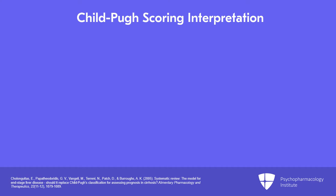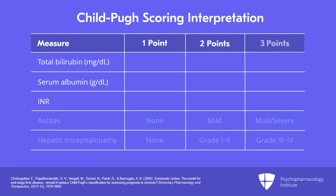Here is the scoring system. For each of the five elements, they are given one, two, or three points depending on severity. For total bilirubin, if you're less than two — meaning a normal bilirubin — you get one point; if two to three, two points; greater than three, three points. For serum albumin, greater than 3.5 is normal and gets one point; 2.8 to 3.5 gets two points; less than 2.8 gets three points. For INR, less than 1.7 gets one point; 1.71 to 2.30 gets two points; greater than 2.3 gets three points.